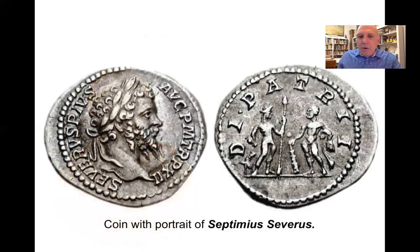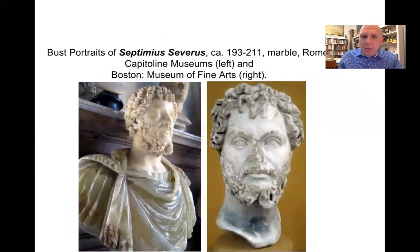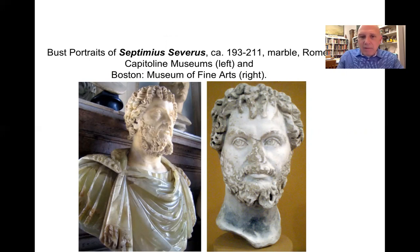Here is a coin showing both the recto and verso with a portrait of Septimius Severus, and other bust portraits — one in Rome and the other in Boston. As you can see, there is a relatively consistent and recognizable portrait of this bearded emperor across multiple works.